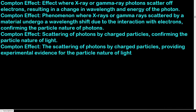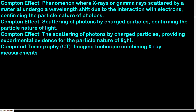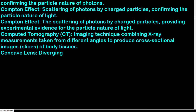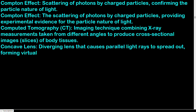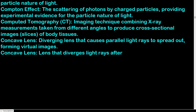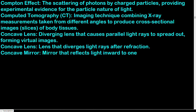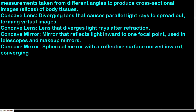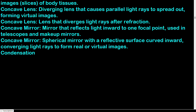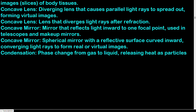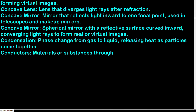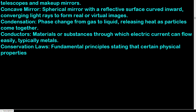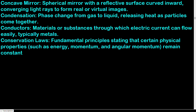Computed tomography (CT): imaging technique combining X-ray measurements taken from different angles to produce cross-sectional images of body tissues. Concave lens: diverging lens that causes parallel light rays to spread out, forming virtual images. Concave mirror: spherical mirror with a reflective surface curved inward, converging light rays to form real or virtual images — used in telescopes and makeup mirrors. Condensation: phase change from gas to liquid, releasing heat as particles come together. Conductors: materials through which electric current can flow easily, typically metals.